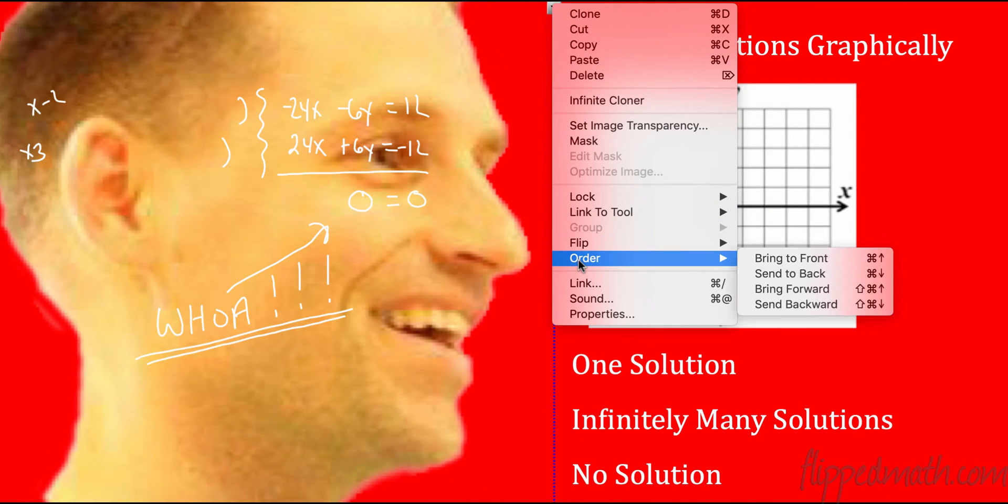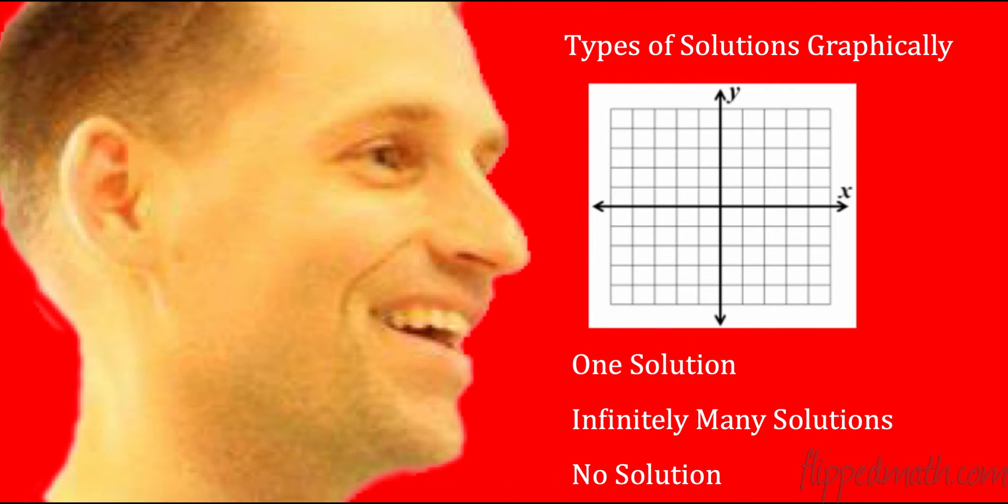All right. So here we go. There are three types of solutions that you can have when we graph these. One is an ordered pair. So maybe I graph this line and I graph this line. And where they meet is my x and y. It's my ordered pair. That is my solution. So when I have one solution, I'm actually getting a number in here for my x. And I'm getting a number, could be the same, probably a different number for my y. So whenever you get an x equals a number or a y equals a number, you know you are on the right track to getting one solution. And one solution looks like that where they cross.